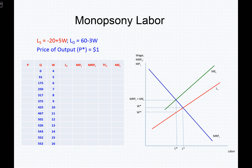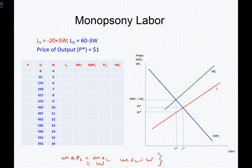As an entrepreneur, investor, or manager making labor decisions, you live by your numbers. Your goal in the labor environment is always to hire the number of workers where marginal revenue product of labor equals marginal expense of labor. In a competitive market, marginal expense of labor equals the wage. But in a monopsony environment, the marginal expense of labor is greater than the wage. Knowing your numbers allows you to make far better decisions, and helps you understand why different workers receive different wages.